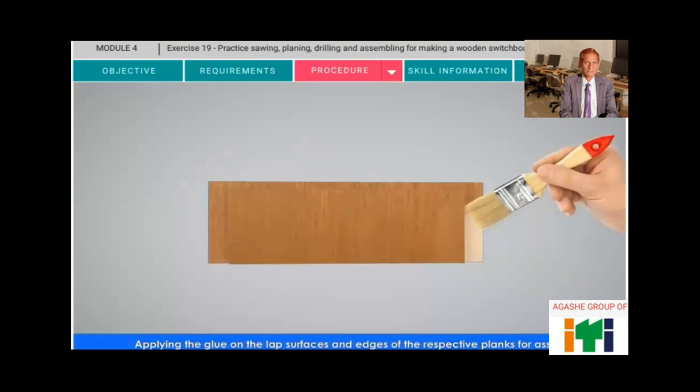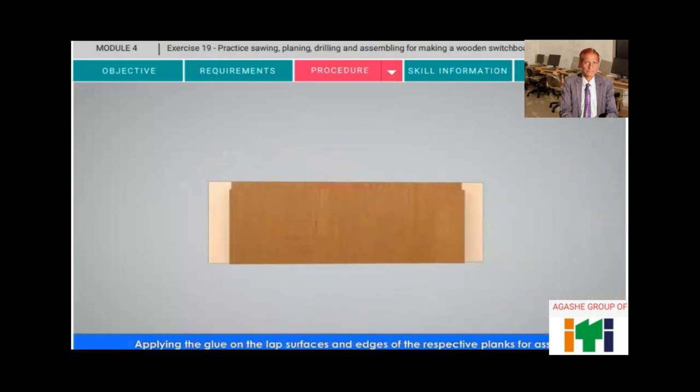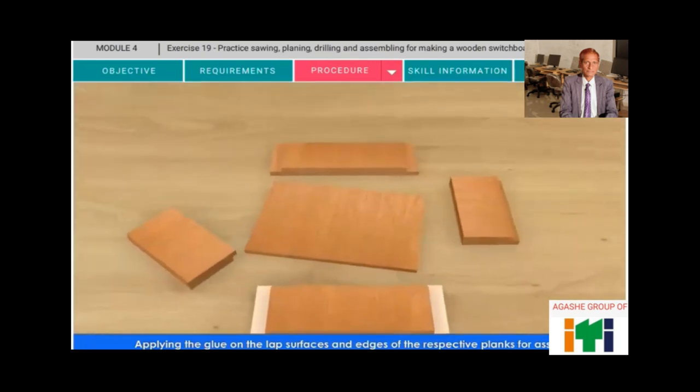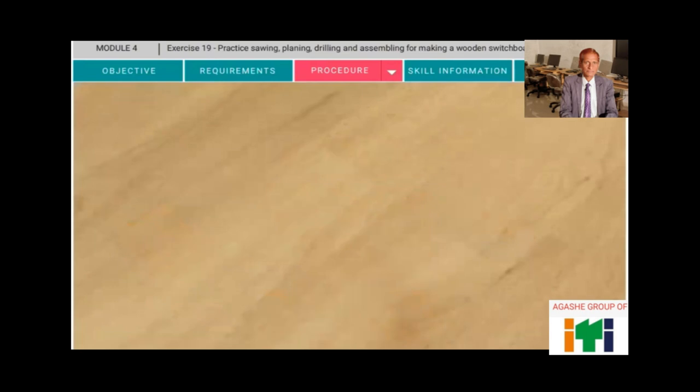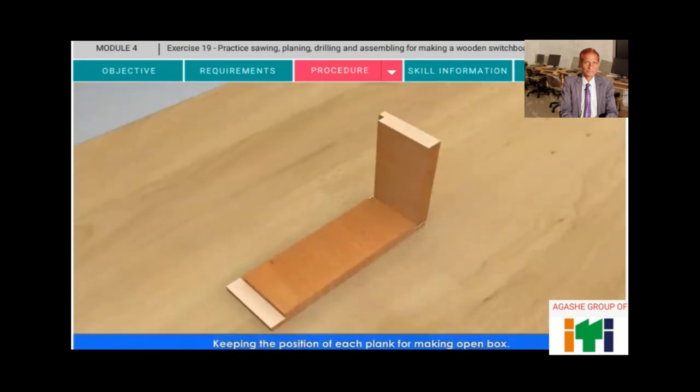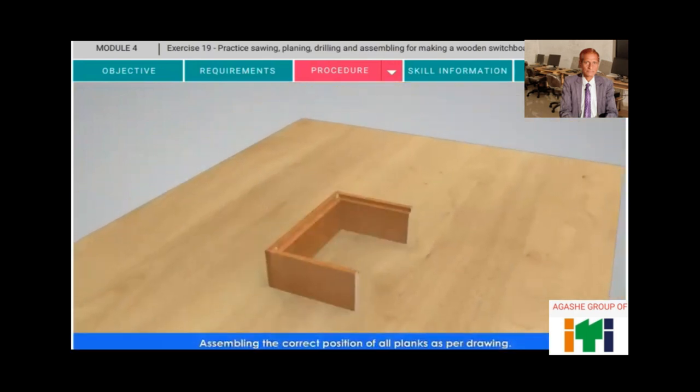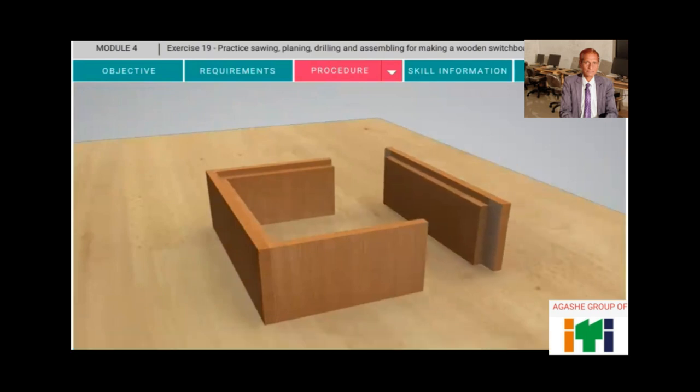Apply the glue on the lap surfaces and edges of the respective planks for assembly. Keeping the position of each plank for making open box. Assembling the correct position of all planks as per drawing.